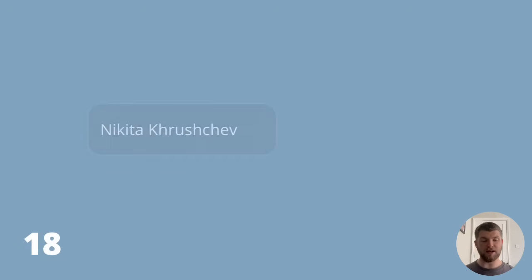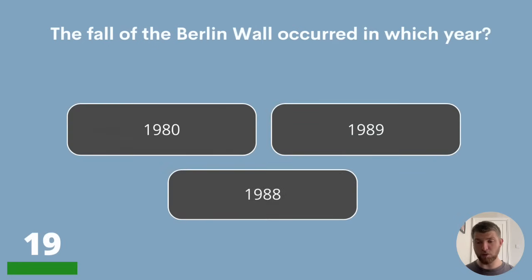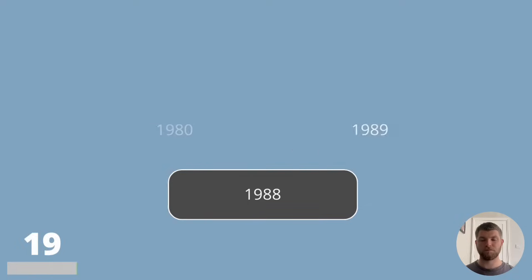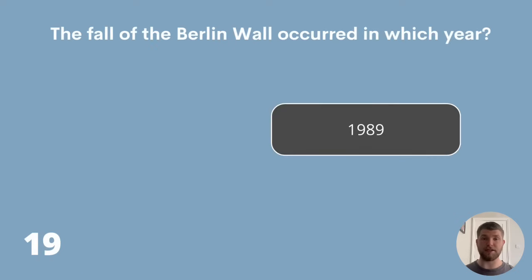Question 19. The fall of the Berlin Wall occurred in which year? 1980, 1989 or 1988? The answer is 1989.